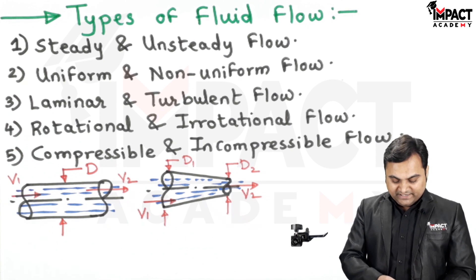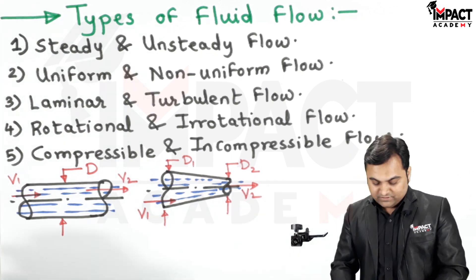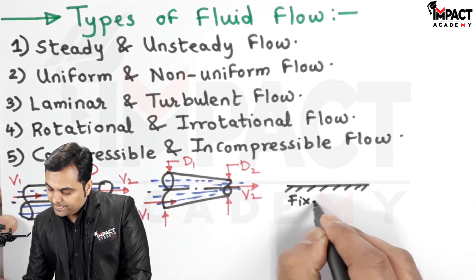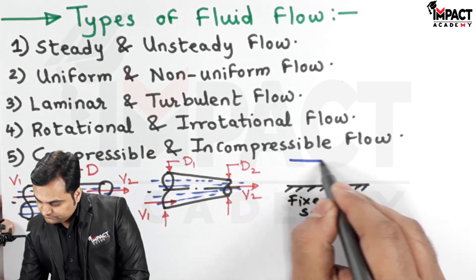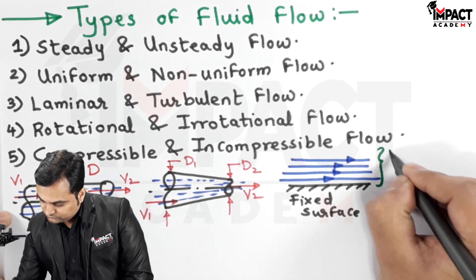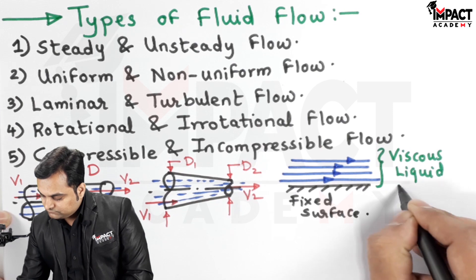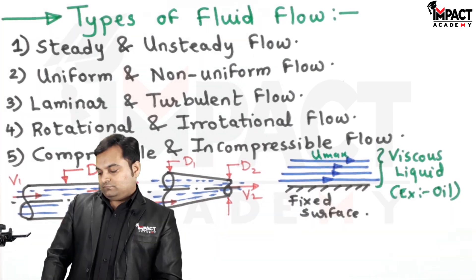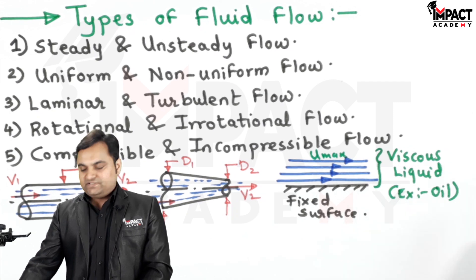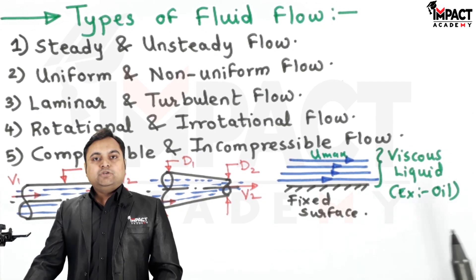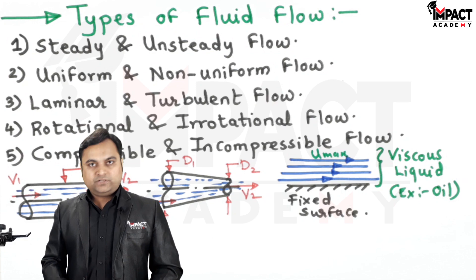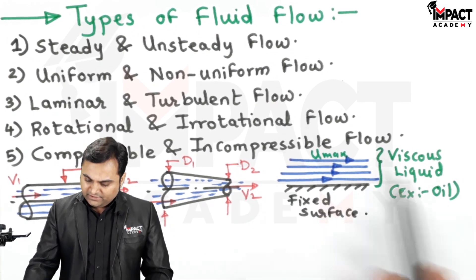Then laminar and turbulent flow. Laminar flow means the fluid is flowing in the form of layers — the fluid layers are not crossing each other's path. For example, over a fixed surface, a viscous liquid like oil flows in different layers and those layers do not cross each other's path. That is considered as laminar flow.